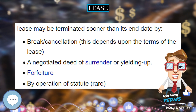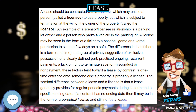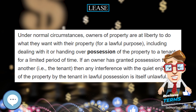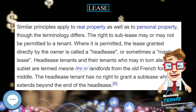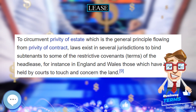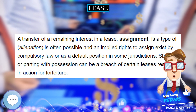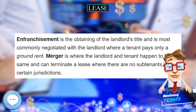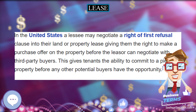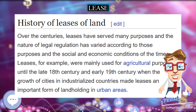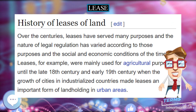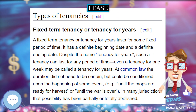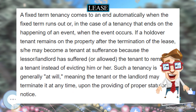A transfer of remaining interest in a lease — assignment — a type of alienation, is often possible, and an implied right to assign exists by compulsory law or as a default position in some jurisdictions. Sharing or parting with possession can be a breach of certain leases resulting in action for forfeiture. Enfranchisement is the obtaining of the landlord's title and is most commonly negotiated with the landlord where a tenant pays only a ground rent. Merger is where the landlord and tenant happen to be the same and can terminate a lease where there are no subtenants in certain jurisdictions. In the United States, a lessee may negotiate a right of first refusal clause into their land or property lease, giving them the right to make a purchase offer on the property before the lessor can negotiate with third-party buyers.